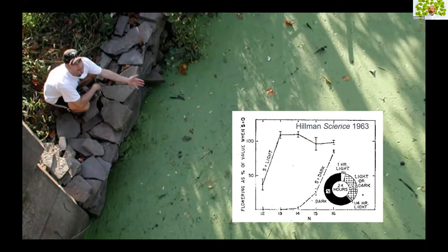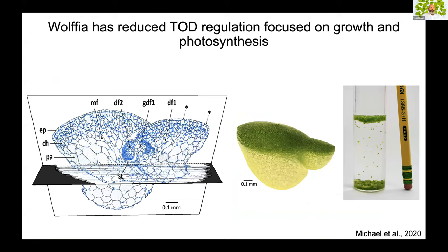Much of my interest in time-of-day networks started as a postdoc when we looked at how many genes are regulated by the circadian clock, light, and temperature in Arabidopsis. What we found is that almost all transcripts are cycling at a specific time of day in Arabidopsis, and depending on the condition you look at, you see different numbers of genes and different phases. When I started my own lab, we took on duckweed — I had always been interested in it because of the work of William Hillman at Brookhaven, who used duckweed, specifically Lemna, to elucidate photoperiodic flowering.